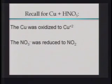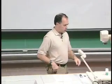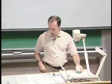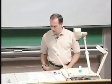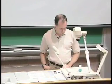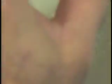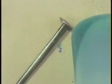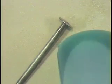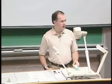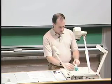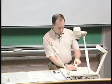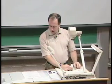I'll just do a quick demo for you. What I've got here is a steel nail — an iron nail — which I've cleaned up with a bit of steel wool so that the surface is nice and shiny. And in this vial I've got a little bit of copper nitrate and a little bit of acid as well. The acid is necessary just to make this reaction go fast.